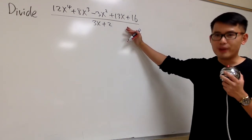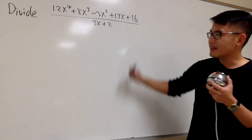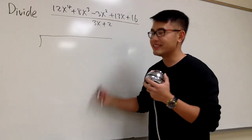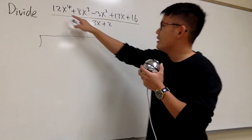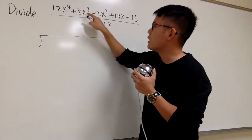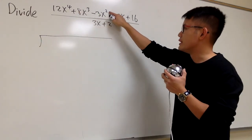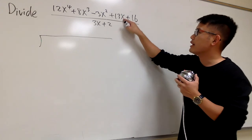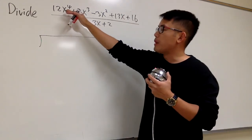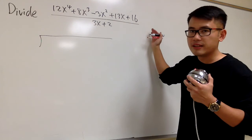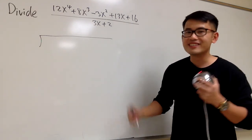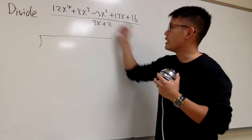Long division is the way to go. So let's go ahead and draw a long division symbol like this. The top right here goes inside. Notice we have x to the 4th, x to the 3rd power, x to the 2nd power, x to the 1st power, and the term that has no x. All the powers right here are present, so we don't have to skip or put down any 0x terms.